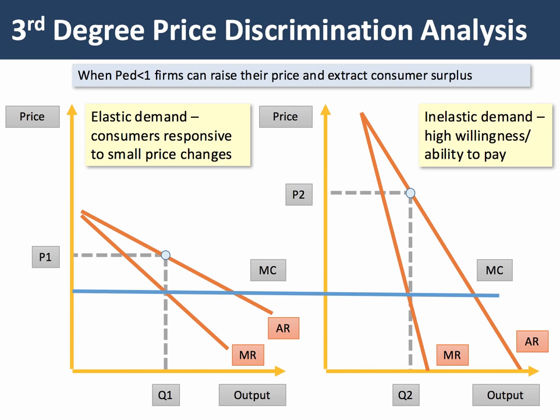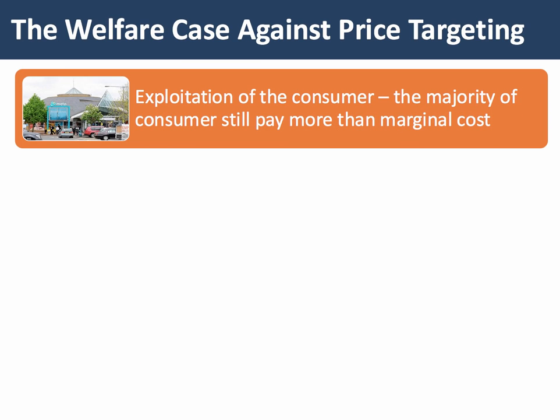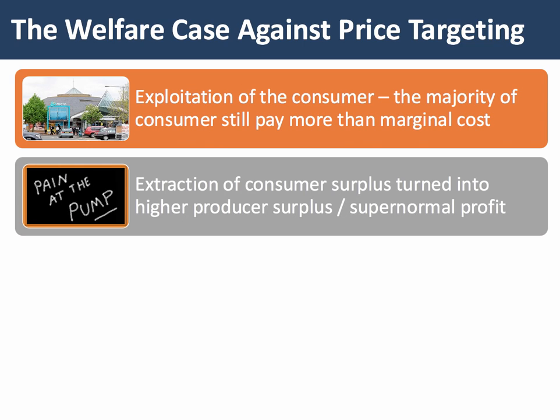So let's build the welfare case against price discrimination. The first point is that price discrimination is a form of price strategy by monopolists which in most cases exploits the consumer. In most cases there's a loss of consumer welfare — the consumer is paying more than the marginal cost of supply. Indeed, what the monopolist is doing is turning consumer surplus into higher producer surplus or supernormal profit.